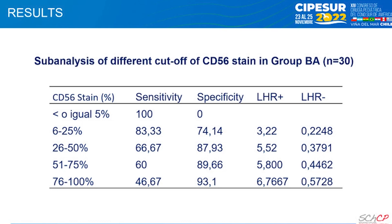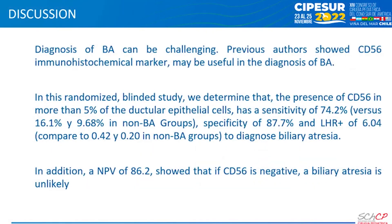In a second analysis, we reviewed the biopsies only from the BA group to determine that a CD56 cutoff value at greater than 5% cell staining was adequate to be considered positive. For this, the biopsies were separated into marking quintiles. We found that the labeling quintile from 6 to 25% had a higher sensitivity and adequate specificity.